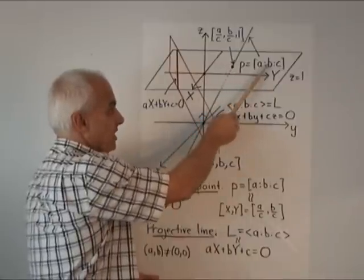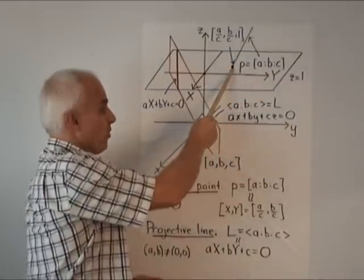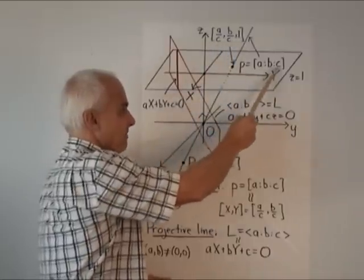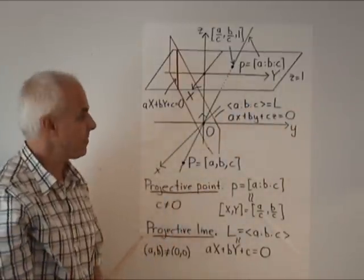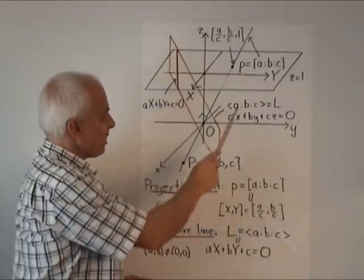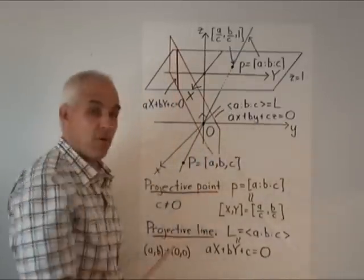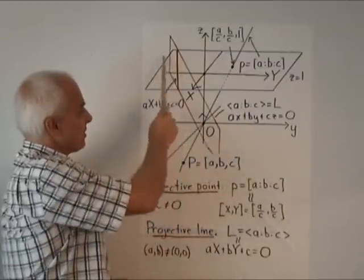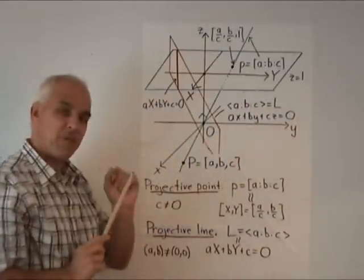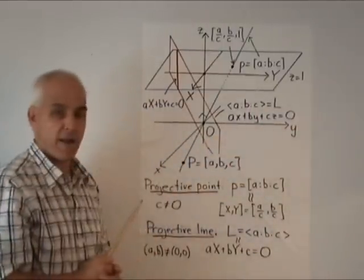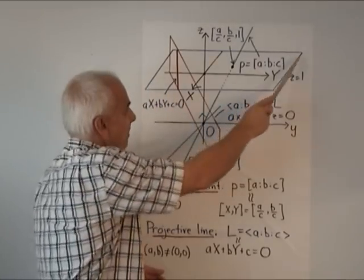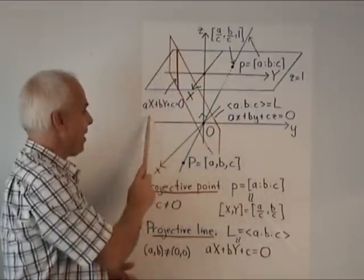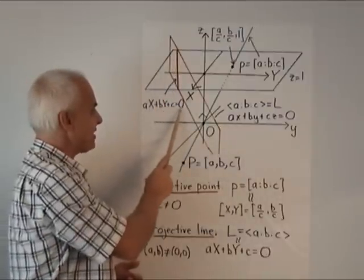The line with coordinates A to B to C intersects our viewing plane at the point with coordinates A over C, B over C, 1. Because we have to divide by C to get the Z coordinate equal to 1. The perpendicular plane here with equation AX plus BY plus CZ equals zero, what we're calling pointy brackets A to B to C, that's going to intersect this plane in the place where we set the Z coordinate equal to 1. So in terms of the coordinates capital X and capital Y on this plane, we get a line. A line with equation AX plus BY plus C equals zero.